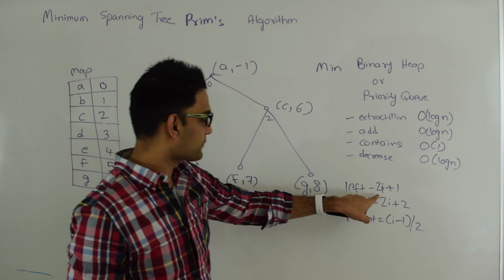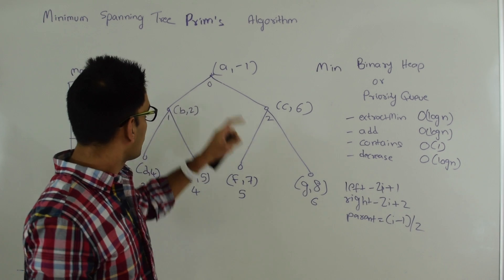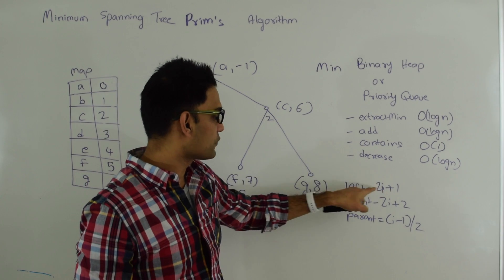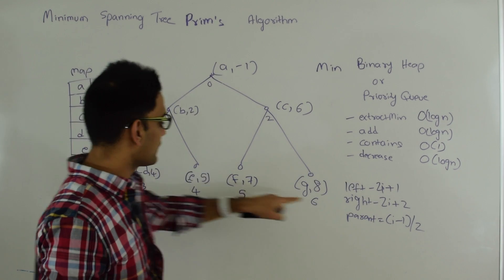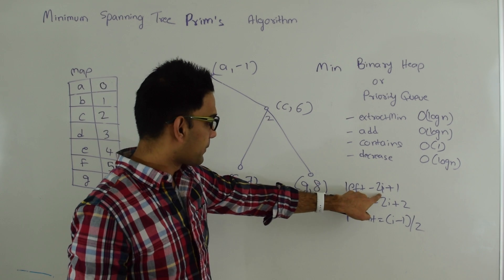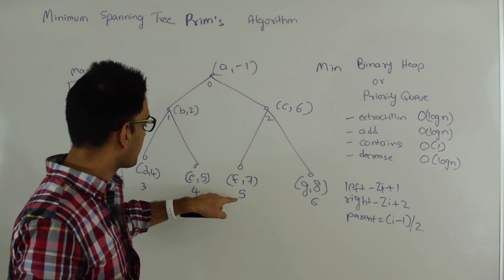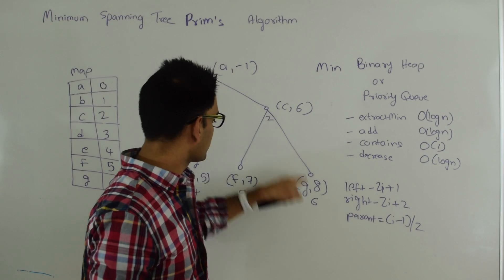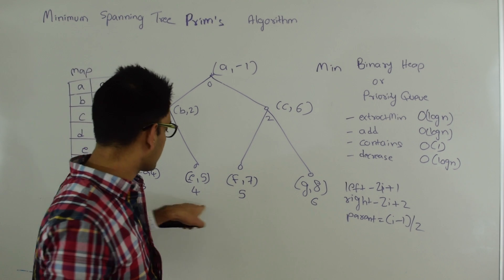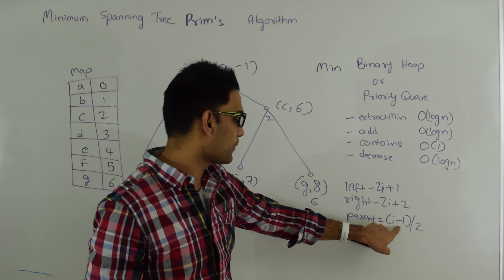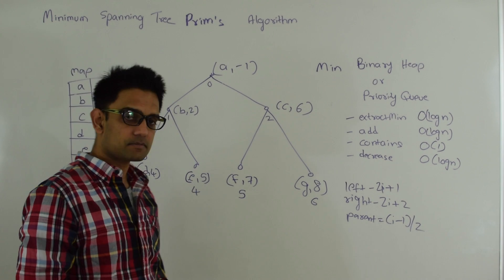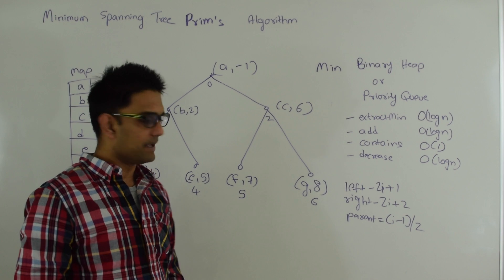To get the left child we apply the formula 2i+1. So to get the root's left child we replace i with 0: 2×0+1 = 1, and the right child is 2×0+2 = 2. For element at index 2, its left child is 2×2+1 = 5 and right child is 2×2+2 = 6. To get a parent, for example 4's parent: (4-1)/2 = 1. So 4's parent is at index 1. This is how a regular binary heap works.